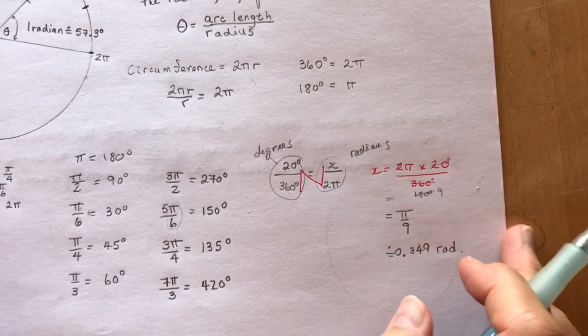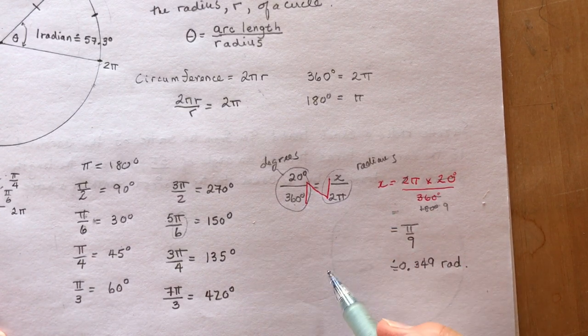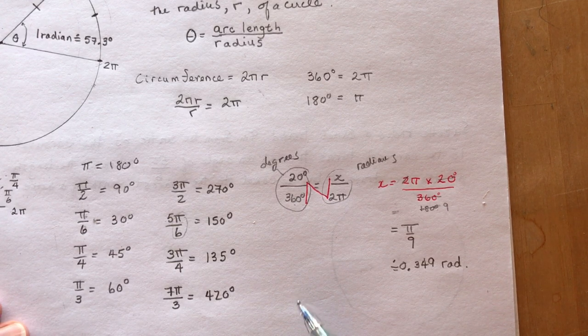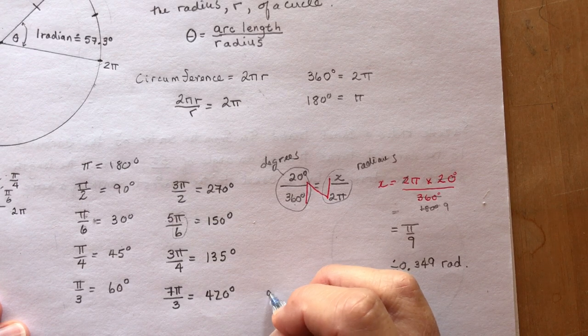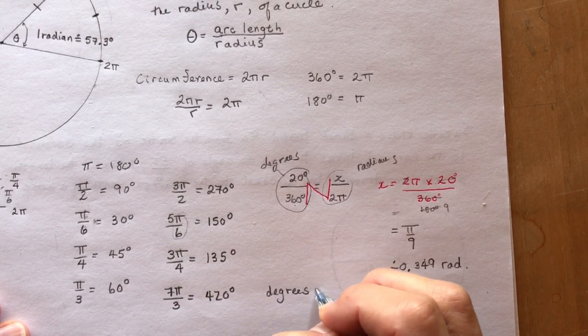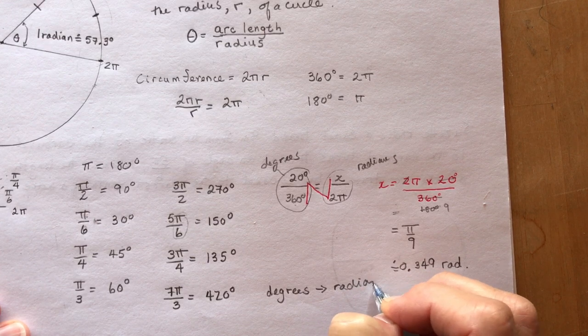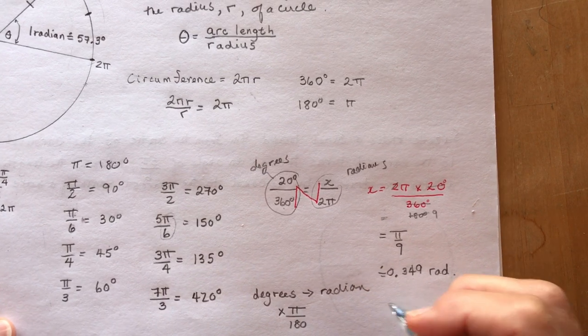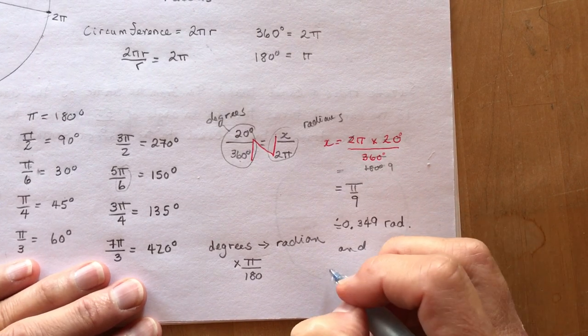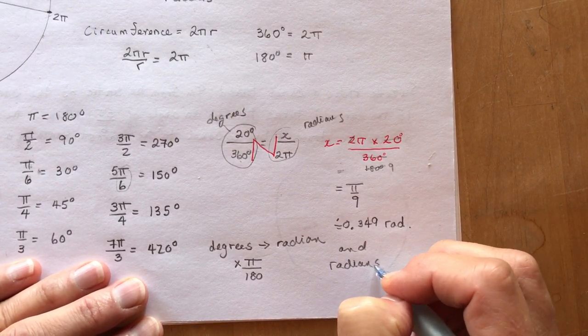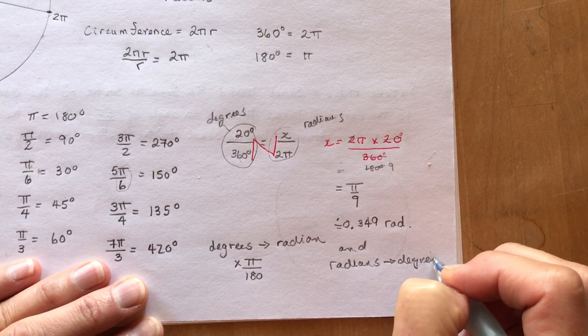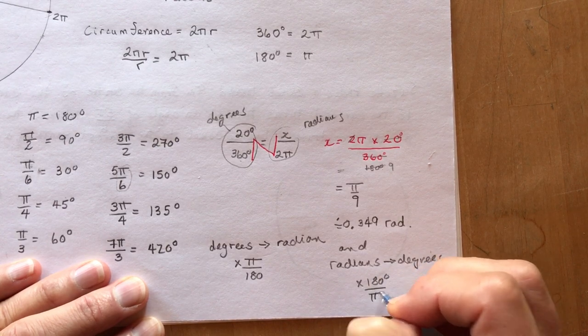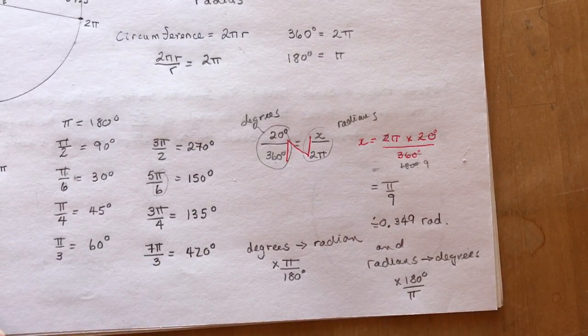That's how you switch between radians and degrees. You can make a ratio any time. You can also do degrees to radians by multiplying by π/180. I like to make the ratios, but you could just write it: degrees to radians, multiply by π/180. And going the other way, radians to degrees, multiply by 180/π.